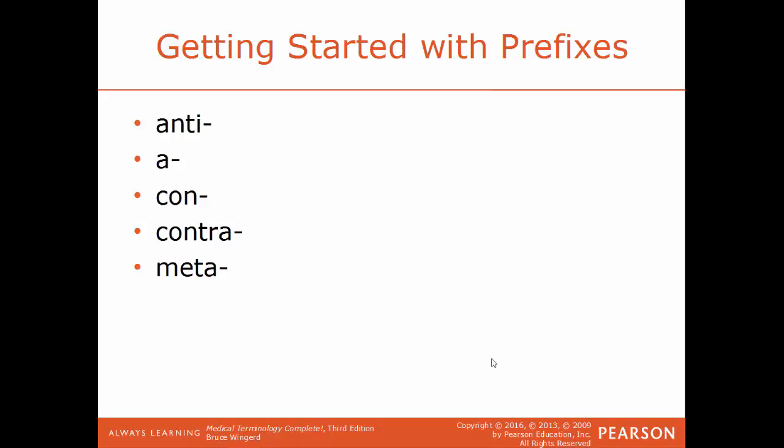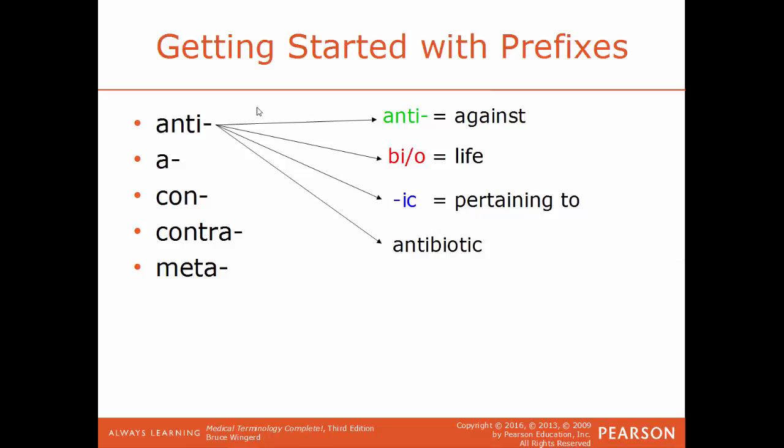Anti means against, and we'll talk about that term again a little more in a second. 'A' means without. Con means together or with. Contra means opposite or against. Body parts that are contralateral are on opposite sides of the body, such as your right arm and left leg. They're opposite sides of your body, they are contralateral. Meta means beyond. So going back to our prefix anti, you add that to the root word bio and add the suffix ic. Anti means against, bio means life, and ic means pertaining to. Add all those together, you get antibiotic. So prefix, root word, and then suffix. Another good example of a constructed medical term. So these are drugs that will fight against the life, usually of a bacteria, for example.